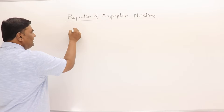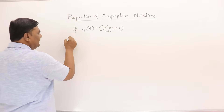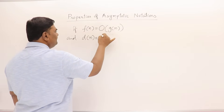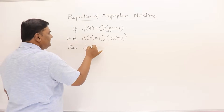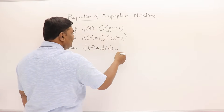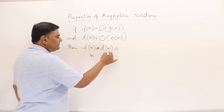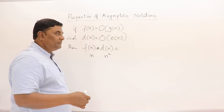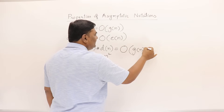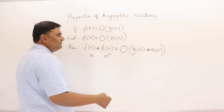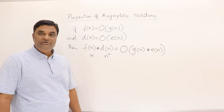Next, if f(n) is O(g(n)) and d(n) is O(e(n)), then what is f(n)·d(n)? If for example this is n and this is n², then the product gives n³. So f(n)·d(n) is O(g(n)·e(n)) — the product of the two notations.